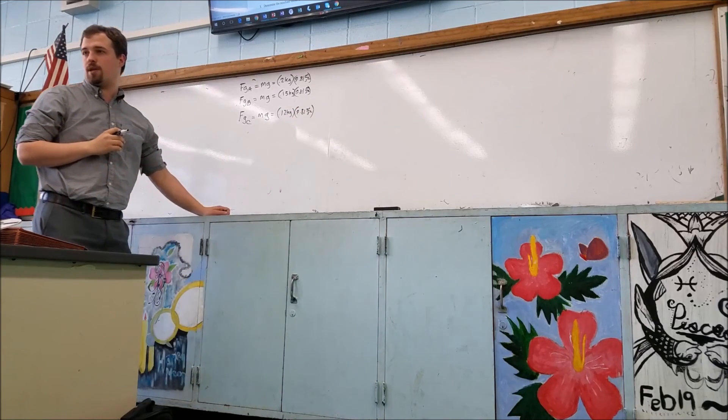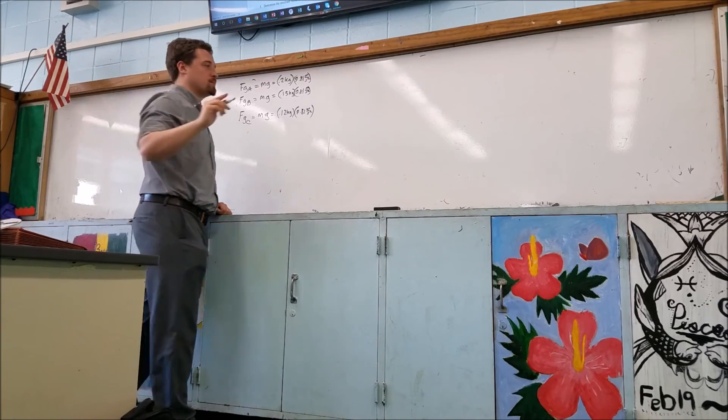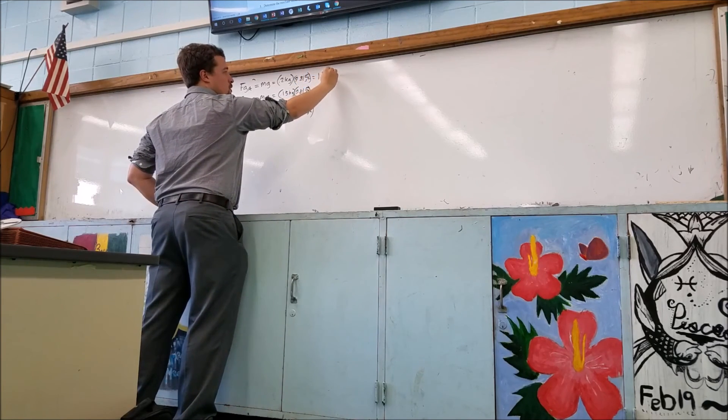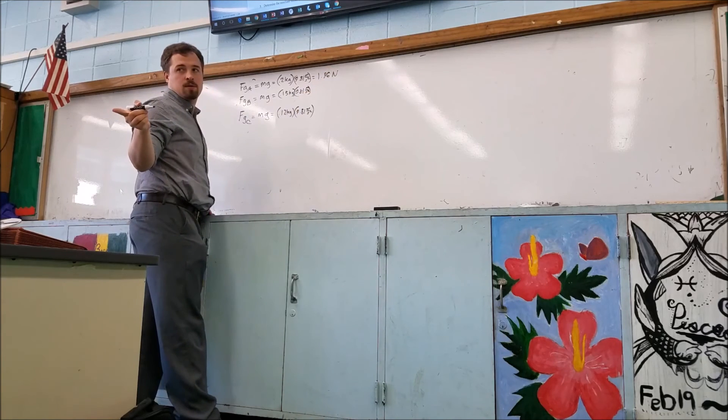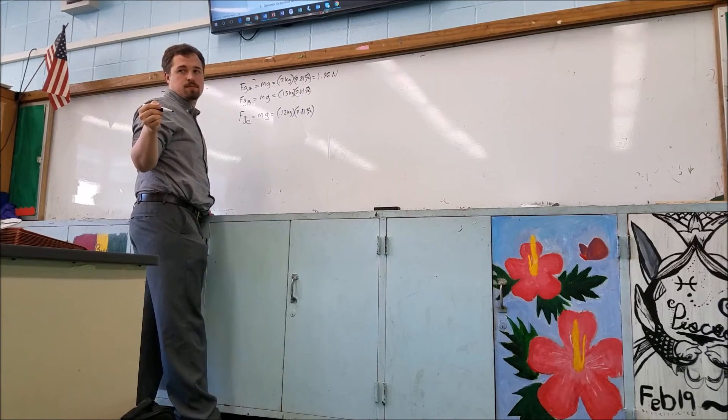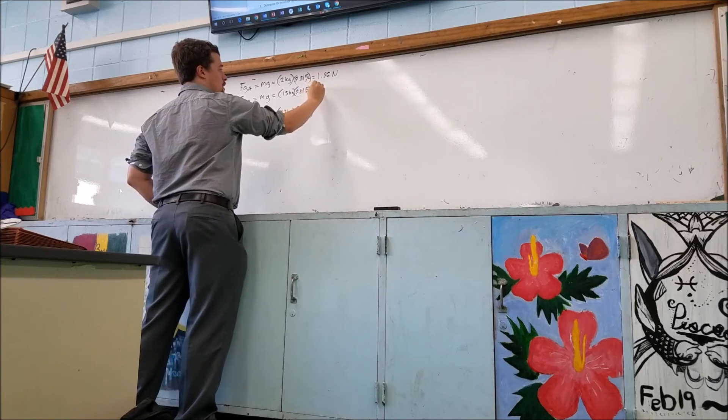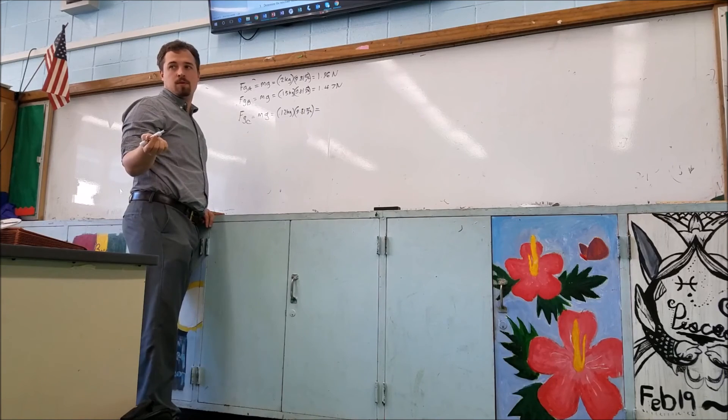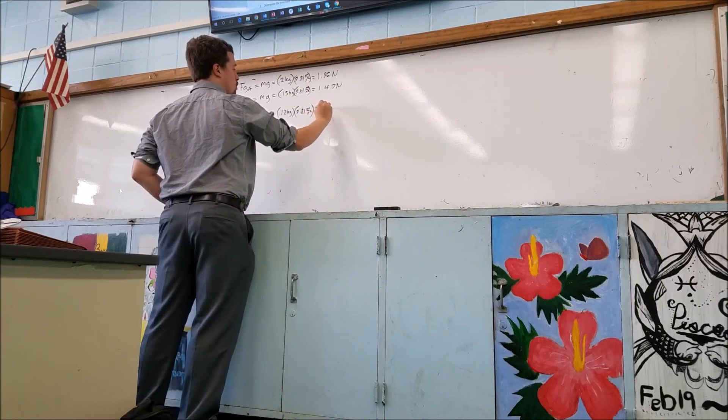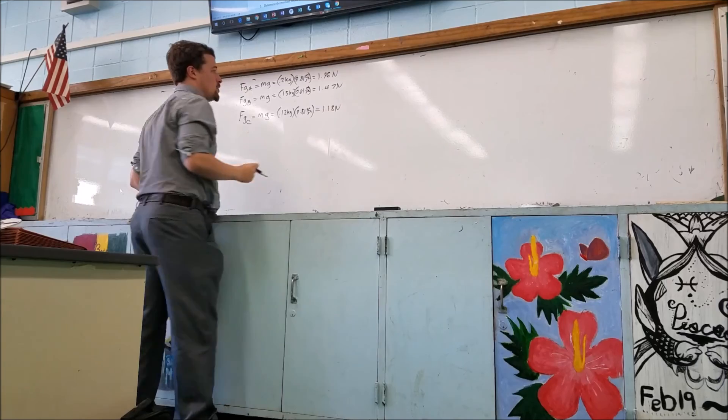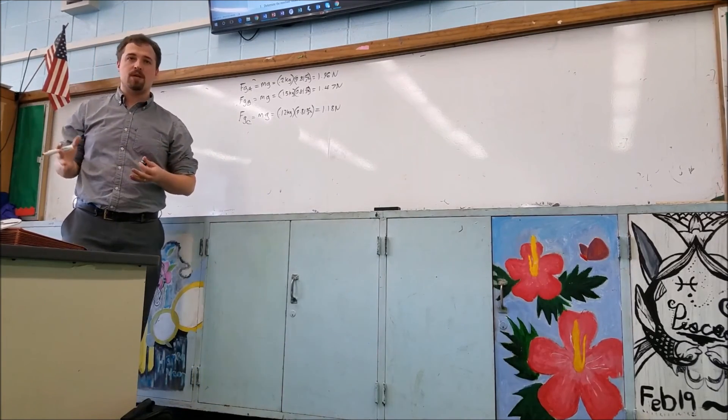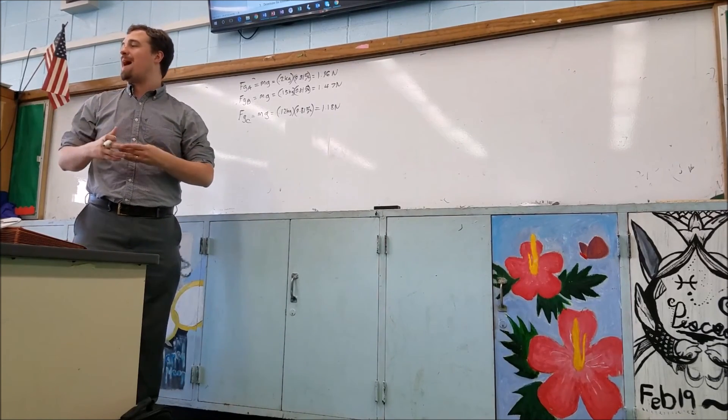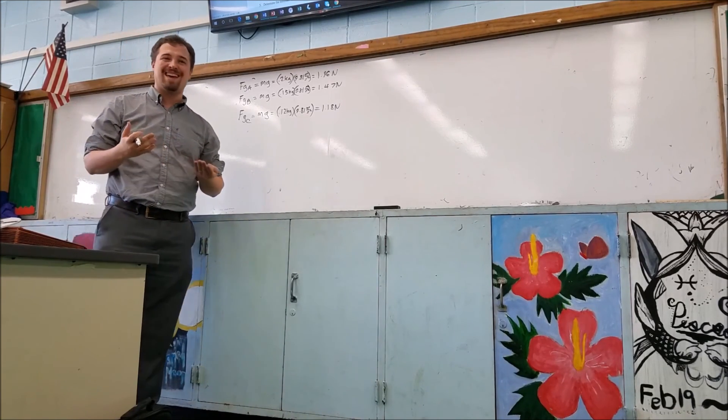Can someone with a calculator put that together for me? The first one is 1.96 newtons. The second one is 1.47 newtons. And the third is 1.18 newtons. So these three numbers are important because they are going to tell us the magnitude of our vector, and if we're doing a scale diagram, the magnitude is going to correspond with the length of the vector.